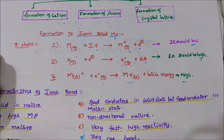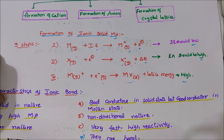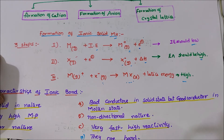The solid MX can be formed by three steps. In the first step, we take a metal atom in gaseous state. The minimum energy required to remove an electron from the metal atom forms a positive ion, because its ionization enthalpy should be low. In the second step, X is also a gaseous atom that requires one electron to attain a uni-negative charge.